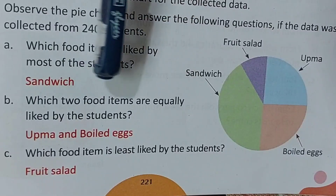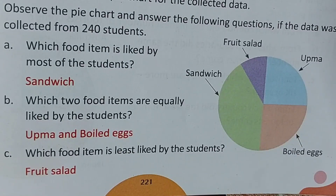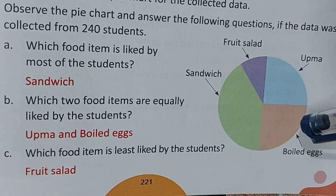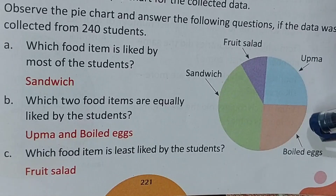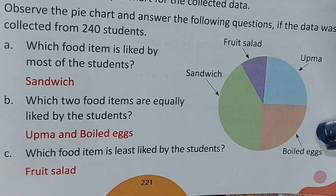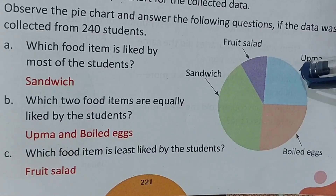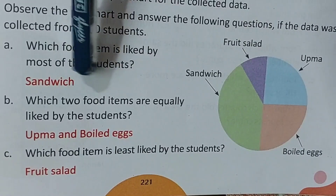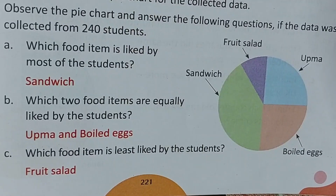Next question: which two food items are equally liked by the students? Look at the picture — which two items are equal in size? Upma and boiled eggs are equal in size, so upma and boiled eggs are liked by an equal number of students.